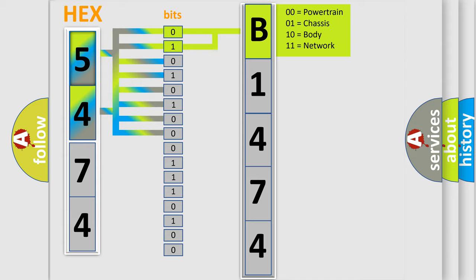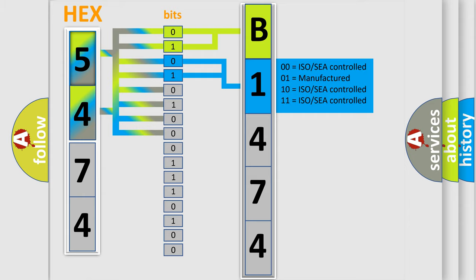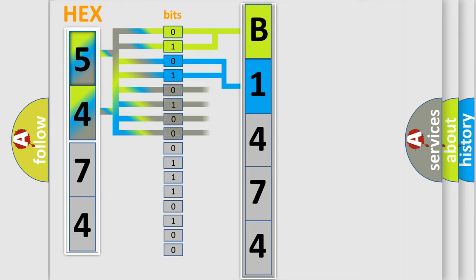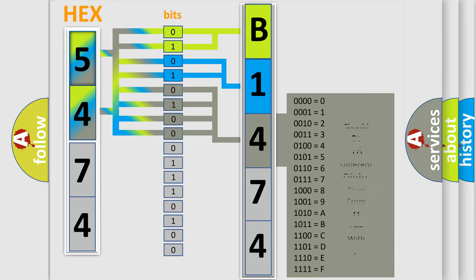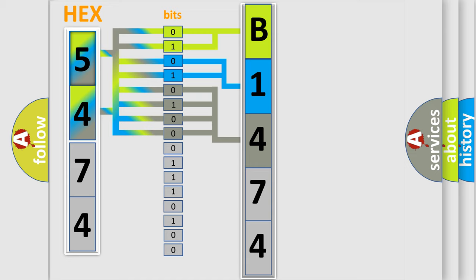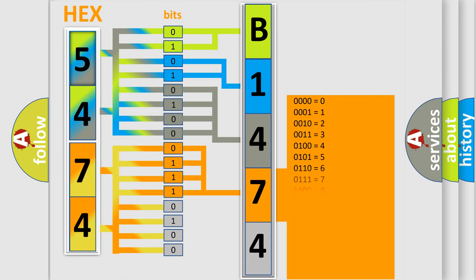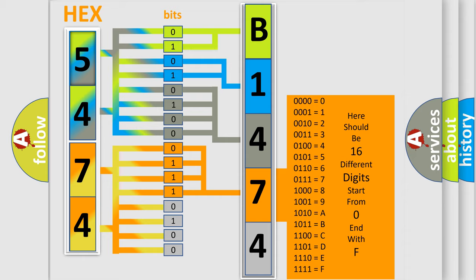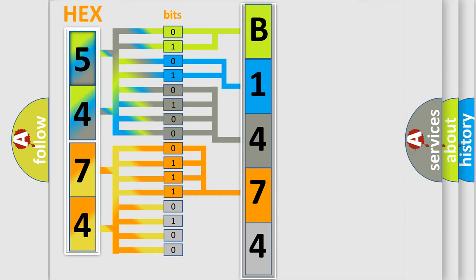By combining the first two bits, the basic character of the error code is expressed. The next two bits determine the second character. The last bits of the first byte define the third character of the code. The second byte is composed of a combination of eight bits. The first four bits determine the fourth character of the code, and the combination of the last four bits defines the fifth character.